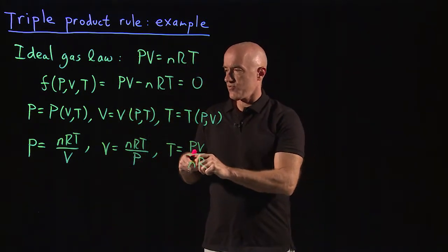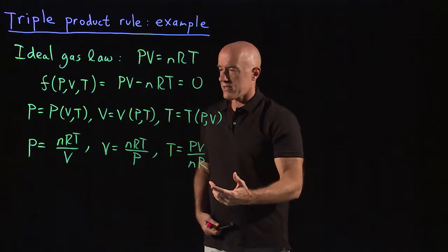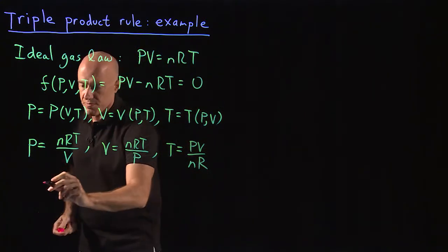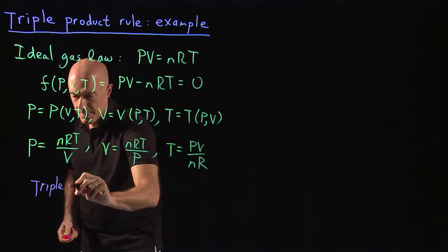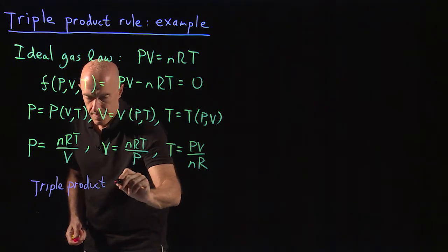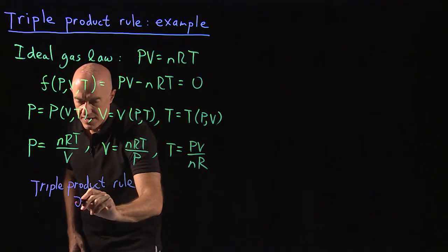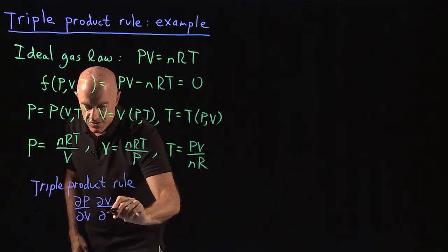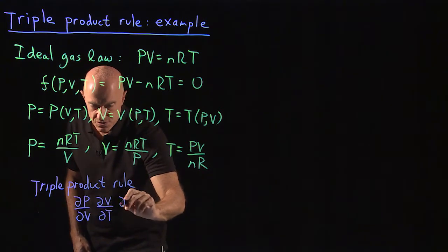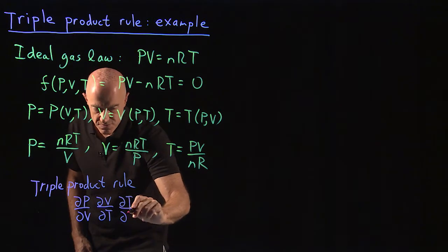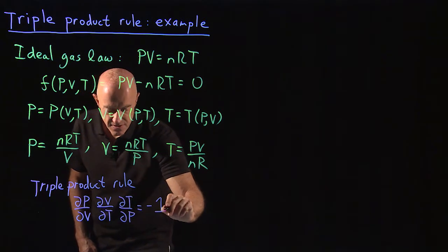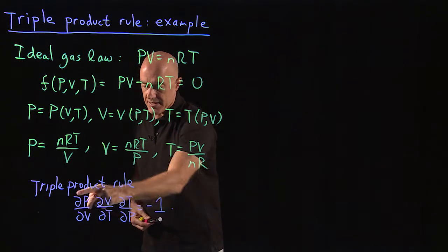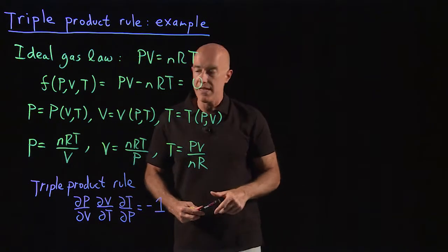So let's compute this triple product. The triple product rule states that the partial derivative of P with respect to V, times the partial derivative of V with respect to T, times the partial derivative of T with respect to P, should equal negative 1. Remember, the V's and the T's and the P's don't cancel — we get minus 1.